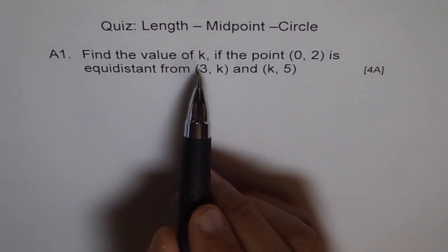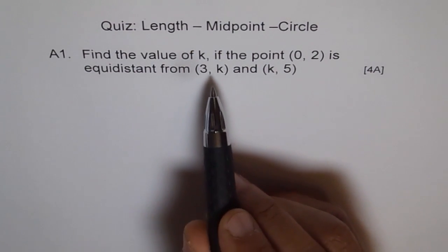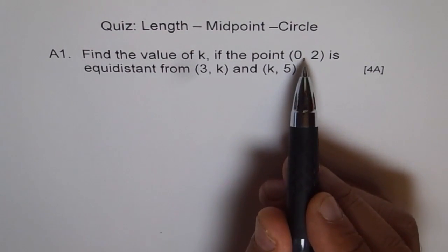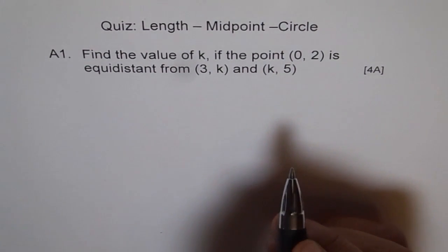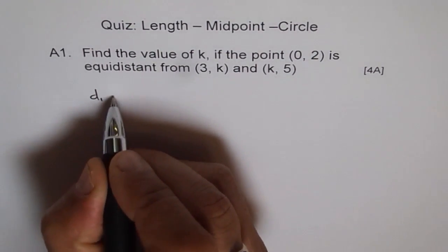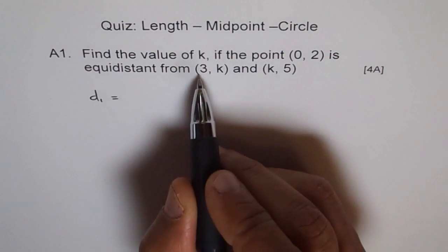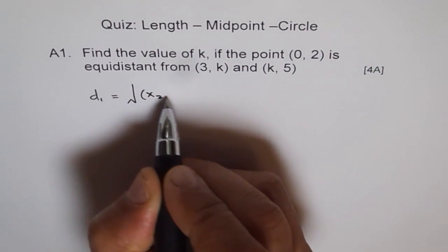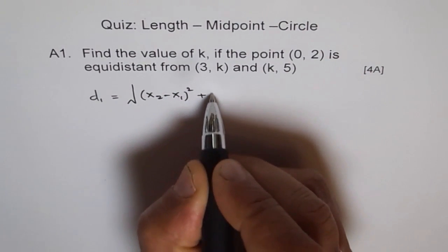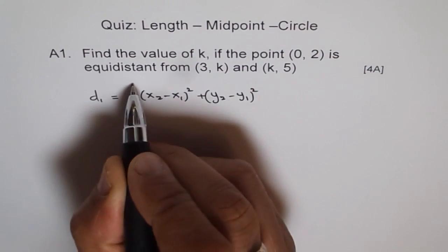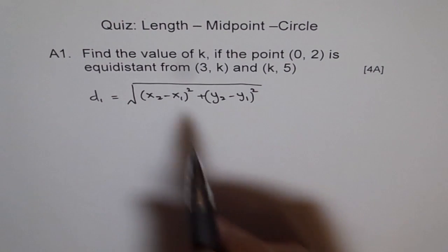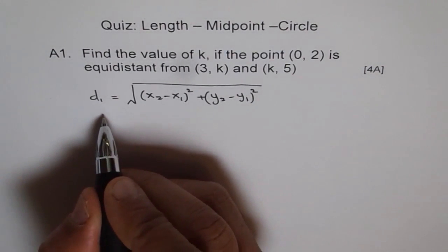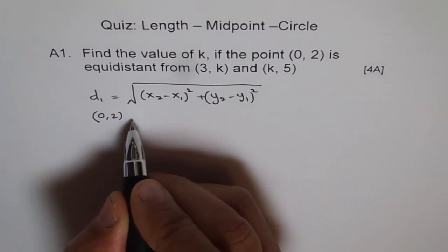To find the value of k so that this point is equidistant from these two points, we should find the distance between k and this point and the given point. So let us find the distance. Let us call distance d1 as between (0,2) and (3,k). The distance formula is x2 minus x1 whole square plus y2 minus y1 whole square, square root. We will use this distance formula and find the distance between the points and equate them. So the first one is between (0,2) and (3,k).